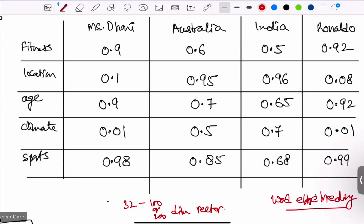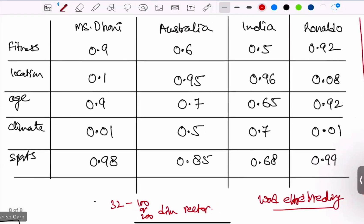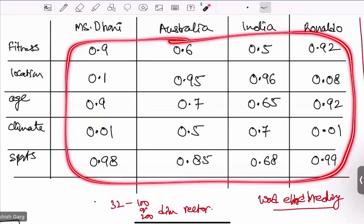Now after this, what we can do is using only this particular matrix, we are able to find the similar words. Here semantics are not lost. The problem with the bag of words and TF-IDF was semantics were lost.